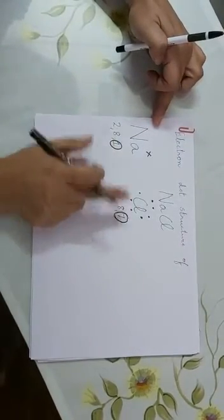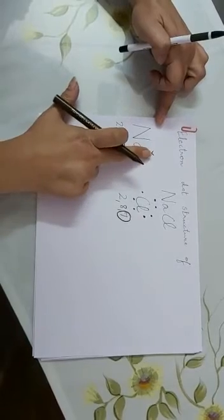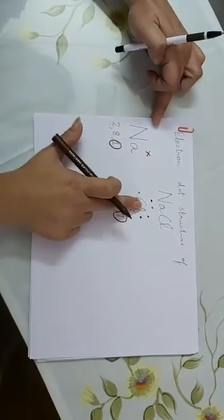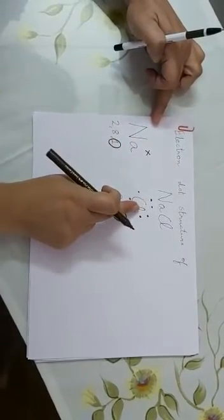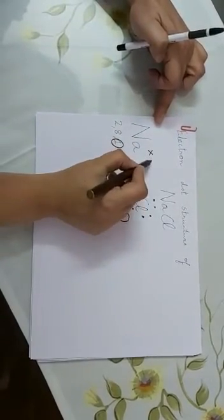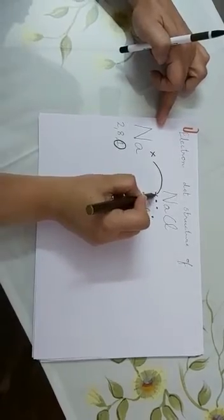Now we can see that sodium is having one extra electron, and chlorine is one short of this electron. So what can be done? Sodium can transfer the electron to this chlorine atom, and this can be shown with the help of a curved arrow.